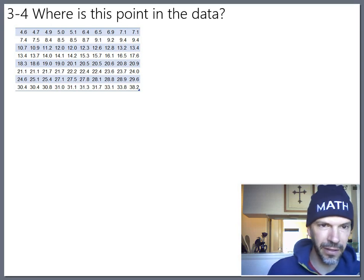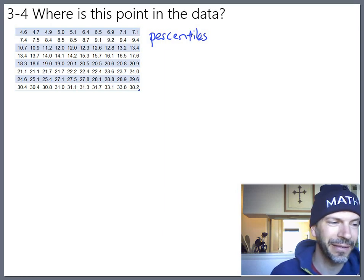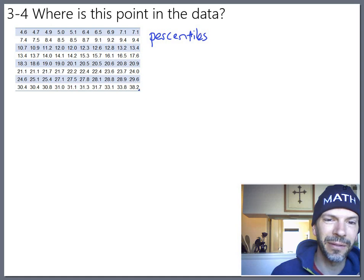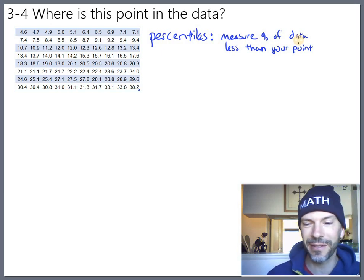I always tell this story in class about how I got a perfect score on my fourth grade math assessment test and still only got 97th percentile. I was very frustrated by that, but the punchline of that story is that percentiles measure the percent of data that is less than the point you're looking at. So when I got my perfect score, three percent of the other fourth graders in Washington also got a perfect score, so I didn't beat them. I only beat the other 97 percent.